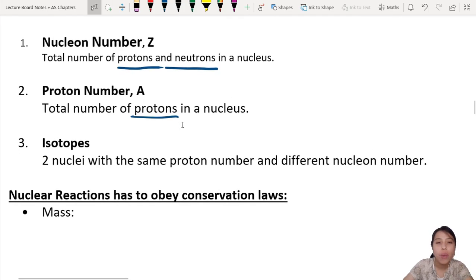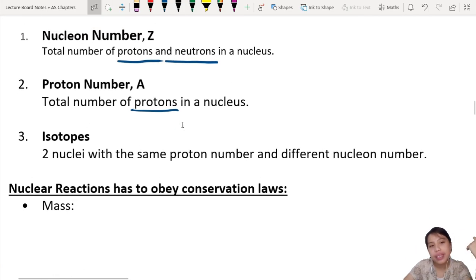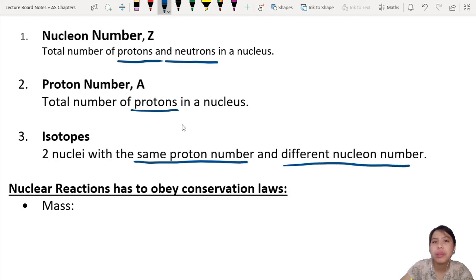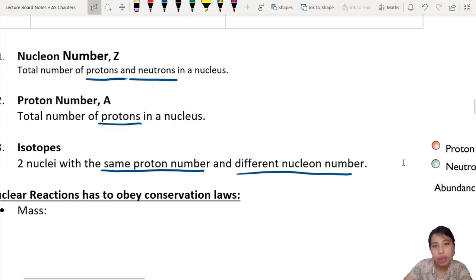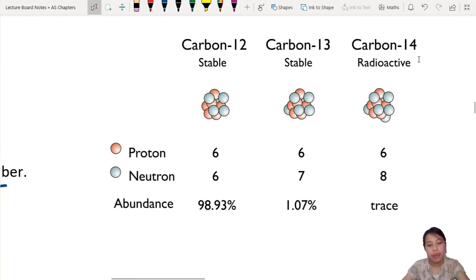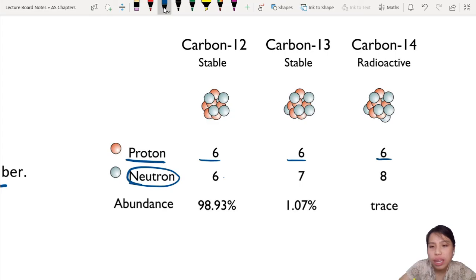One more thing to know is isotopes. What are isotopes? Isotopes are basically nuclei with the same proton number, different nucleon number. For example, carbon: carbon-12, carbon-13, carbon-14. What's the difference? The proton number of all of them is the same - six, six, six. That's what makes them carbon. But the neutrons: six, seven, eight. These fellas got extra neutrons. This is what we call isotopes.